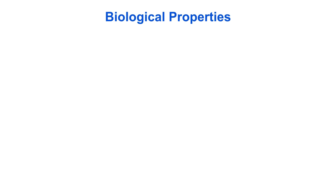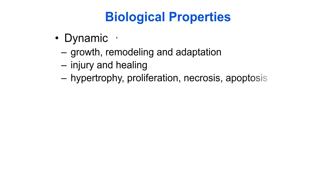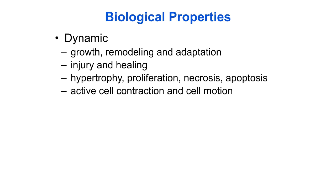Key biological properties of soft tissues include that they are dynamic. They grow, remodel and adapt. They can heal after injury. Their cells change by hypertrophy, proliferation, necrosis and apoptosis, and the cells can often contract or move.